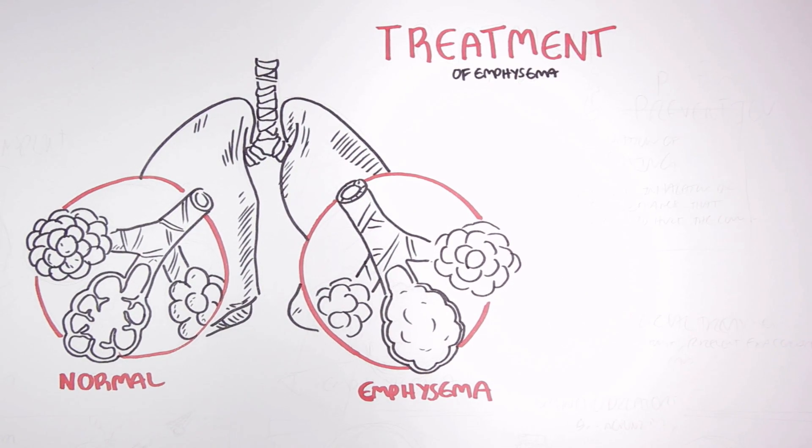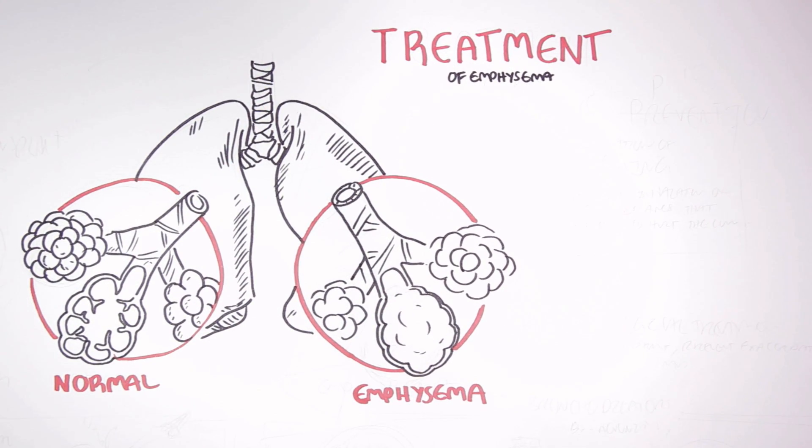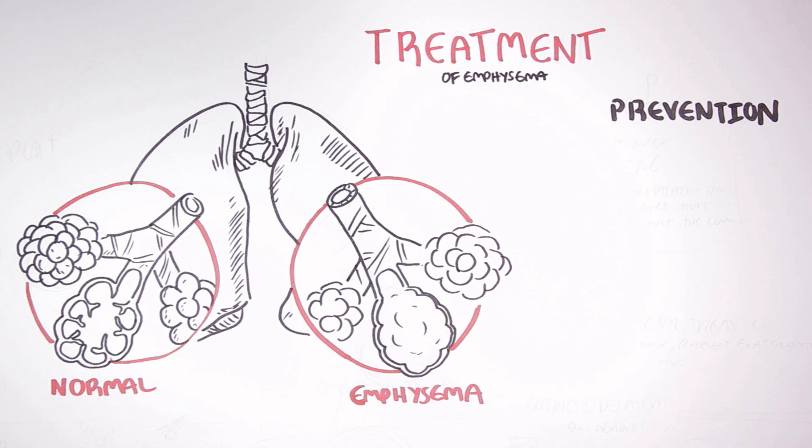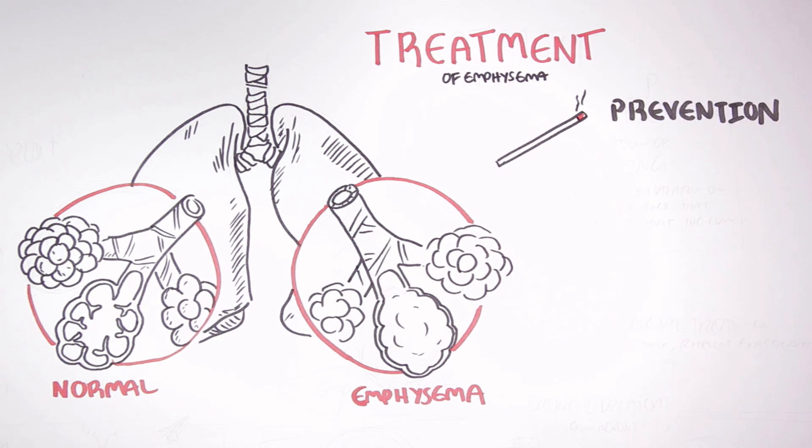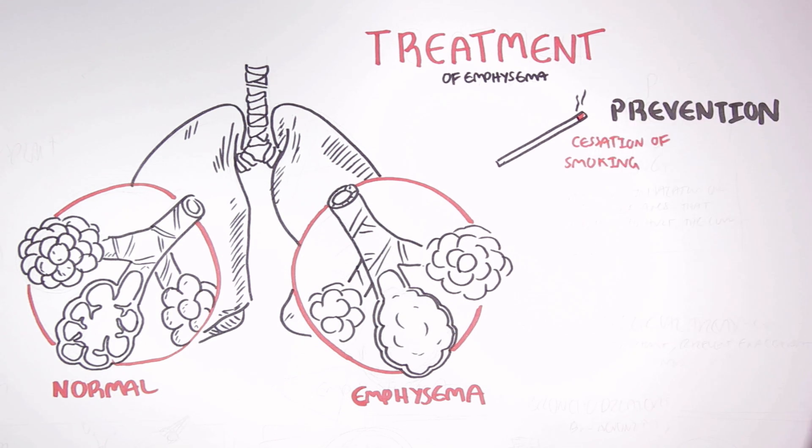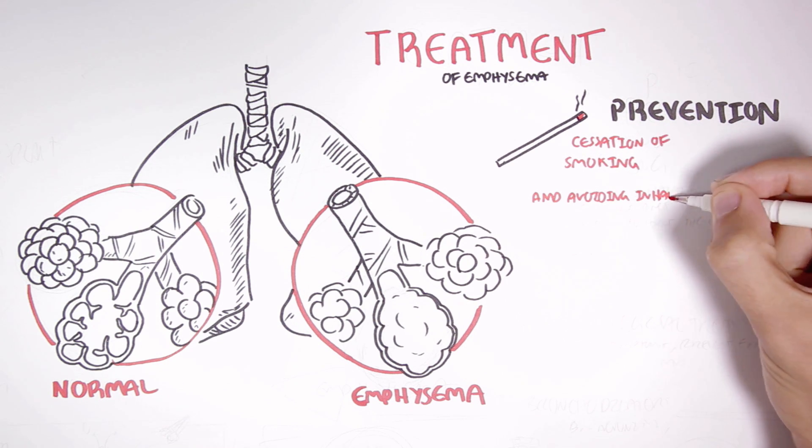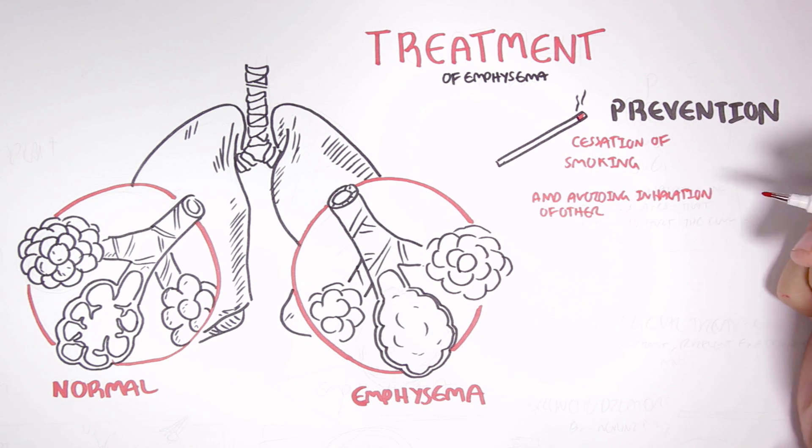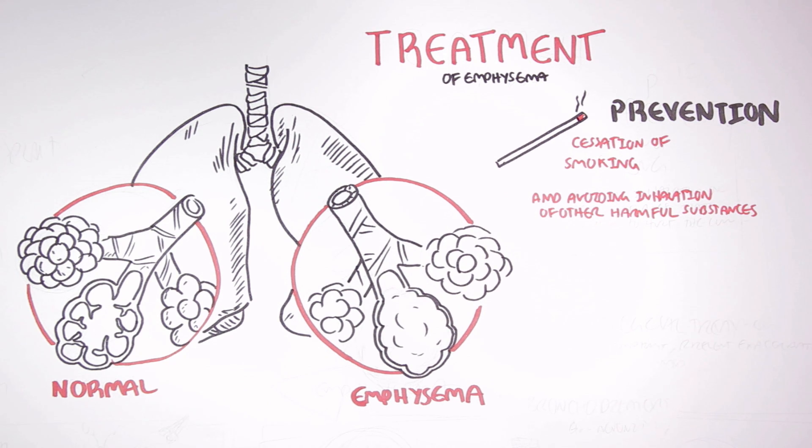The most important step in preventing emphysema and COPD and slowing down its progression is to quit smoking, as smoking is the main cause of emphysema. Another important preventative measure is to not inhale substances that may harm the lungs, for example, air pollution or certain fumes.